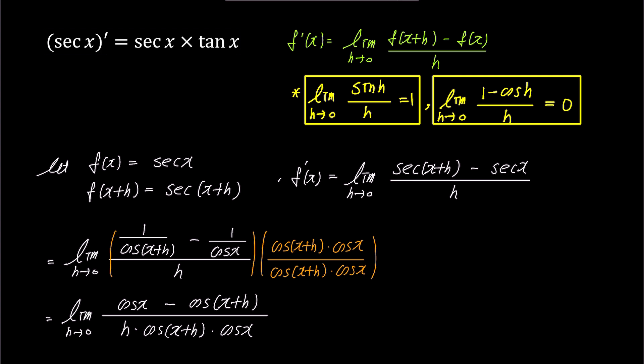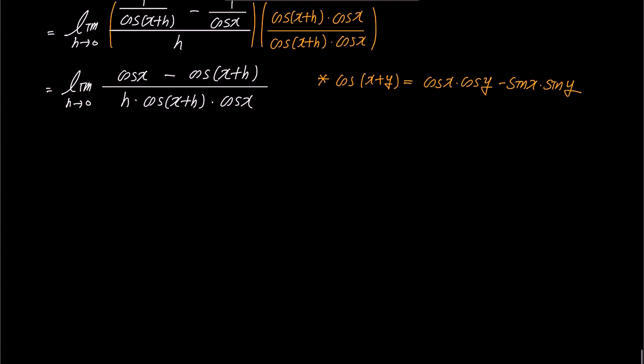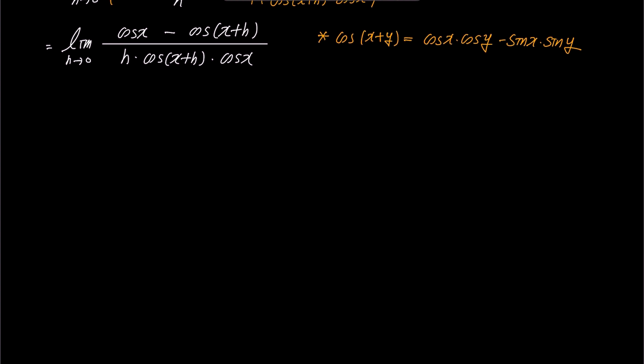The term cosine x plus h in the numerator can be expanded using the compound angle formula for cosine, which is cosine x plus y equals cosine x times cosine y minus sine x times sine y. If we apply this formula with y replaced by h, we get the expression we need.